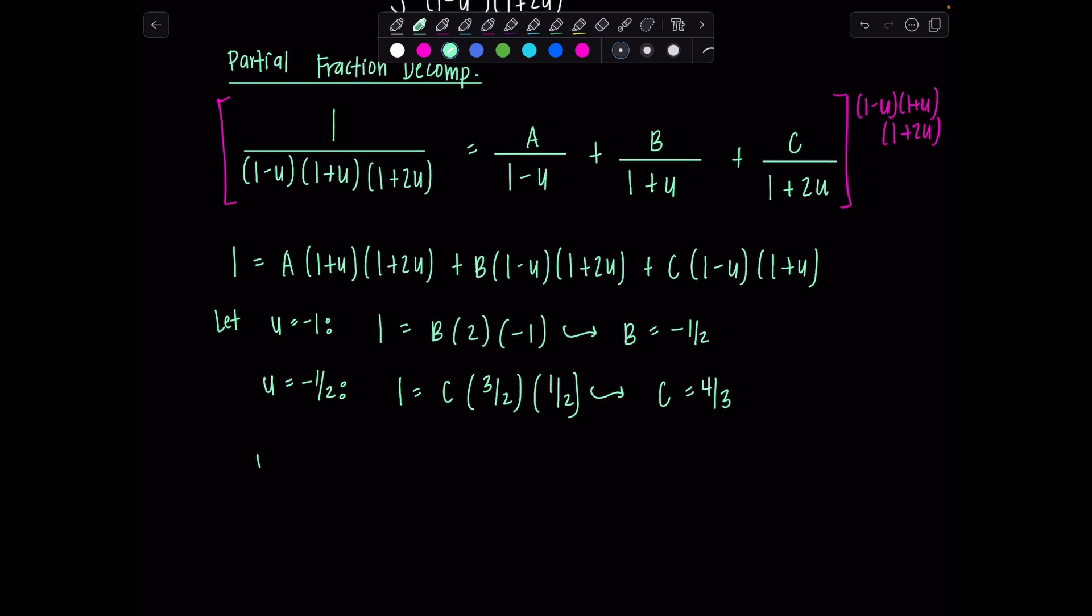And then lastly, let's let u equal positive 1. Then I have 1 equals a times 1 plus 1, that's 2. 1 plus 2, that's 3. Plus, if u is positive 1, this is 0, so this is gone. This is 0, so this is gone. So 6a is 1, so a is 1 over 6.